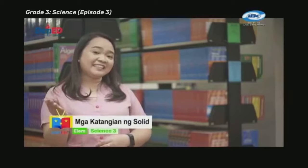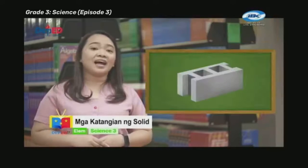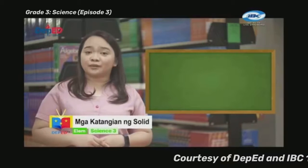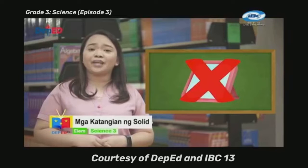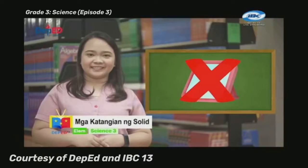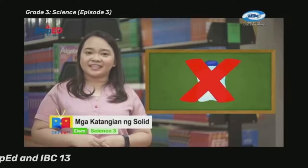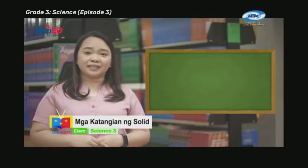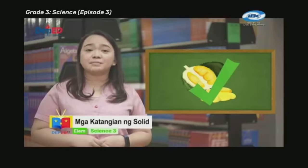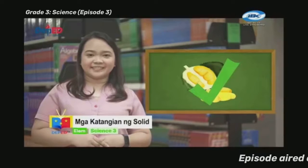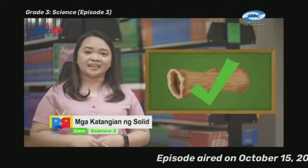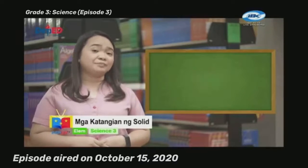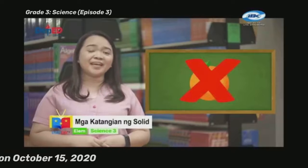Ngayon naman mga bata, sagutan natin ang inyong ginawa. Para sa unang bilang, halo black — check! Ito ay magaspang. Sa ikalawang bilang, salamin — ekis. Ito ay makinis. Sa ikatlong bilang, bote — ekis. Ito ay makinis. Sa ikaapat na bilang, durian — check! Ito ay magaspang. Sa ikalimang bilang, troso — check! Ito ay magaspang. At sa ikaanim na bilang, orange — ekis. Ito ay makinis.